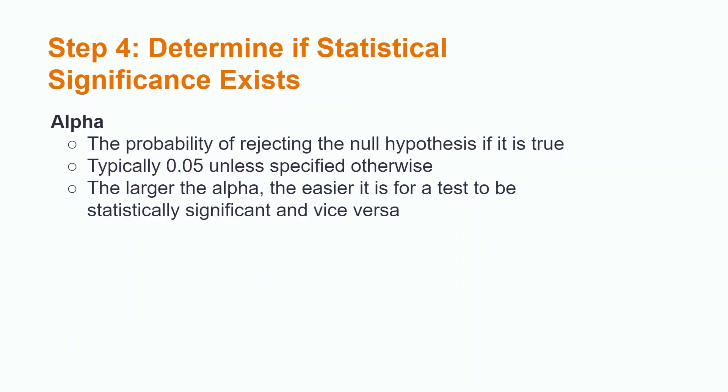In order to determine whether or not a hypothesis test results in statistical significance, we must compare our p-value to our alpha level. Alpha is the probability of rejecting a null hypothesis if it is true, meaning that if alpha is 0.05, we only have a 5% chance of obtaining our results if the null is in fact true. Unless specified otherwise, alpha is always assumed to be 0.05. Increasing our alpha level makes it easier for our results to be statistically significant and vice versa.